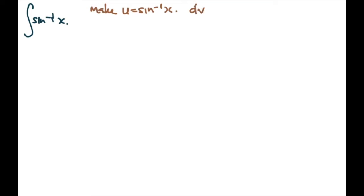That doesn't mean there's no dv — we have to make sure that we have a value for dv, otherwise you won't be able to integrate. So since dv has nothing, we can replace it with one.